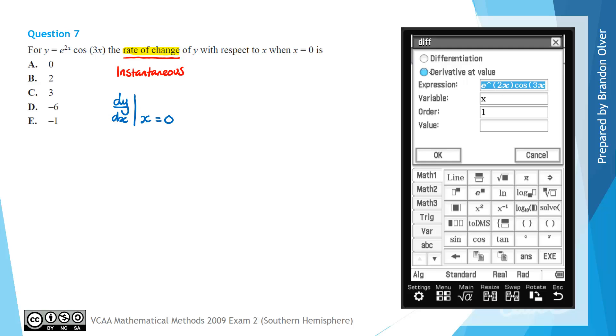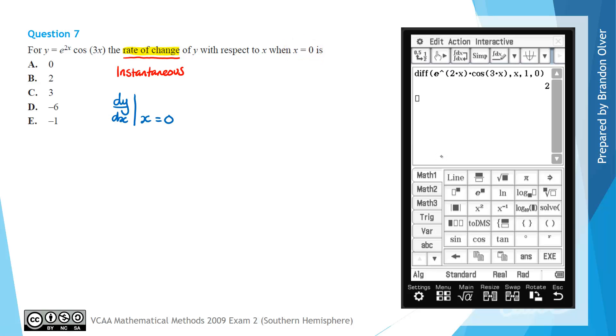Now we want to calculate the derivative, so we can go to interactive calculation diff to do that. In particular, we want to calculate it when x is 0. So we want to calculate a derivative at a value, so we can tap this bubble and the value that we want to differentiate it at is going to be 0. Hitting OK, we find that is equal to 2.